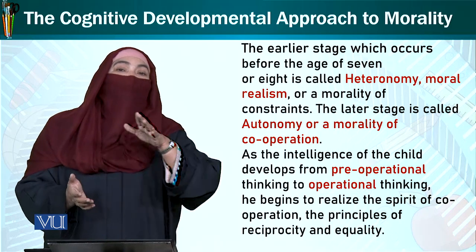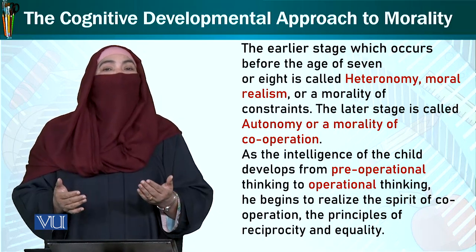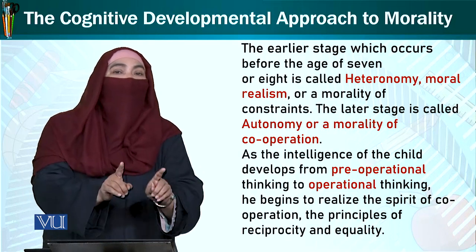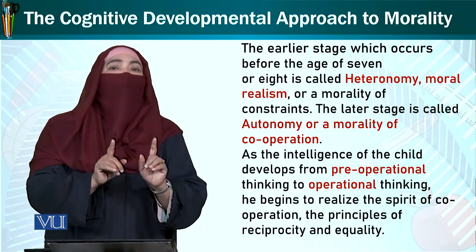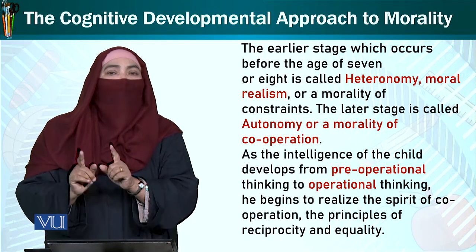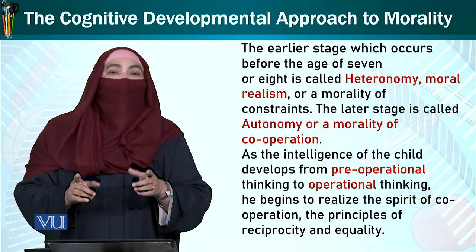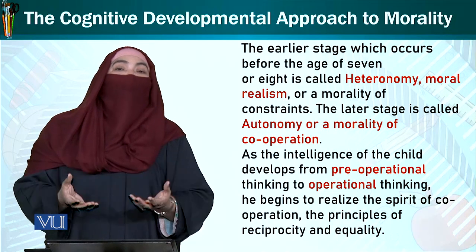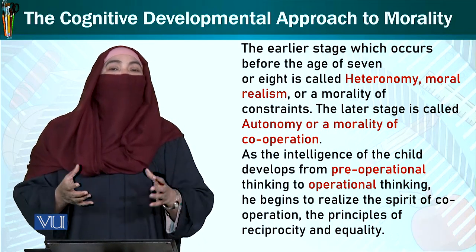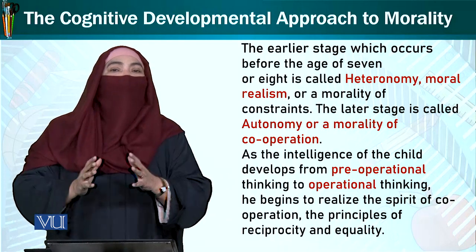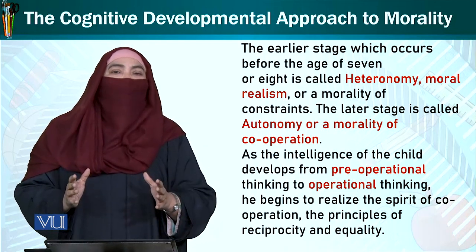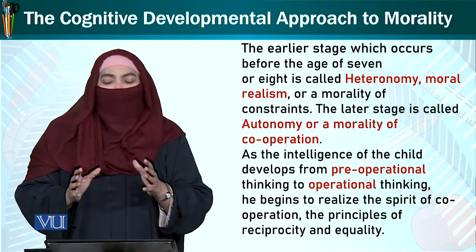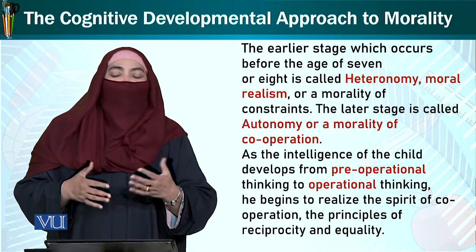Aur aap jab tak doosroon se approval nahi lengey — isi liye hum kehte hai ke jab aap chhote bachon ko yeh batayengey ke yeh achha hai, yeh bura hai, yeh behtar hai, ispeh aapko shabash milni chahiye, ispeh aapne achha nahi kiya — to in cheezon se woh seekhte hai. Woh humari approval ke muhtaj hai is umar mein — ke bhai kya hume dekh raha hai, apne immediate environment mein, kis cheez ke nataij achhe nikal rahe hai, kis cheez ke nataij bure nikal rahe hai — to phir uske mutabik woh apne actions ko improve karte hai.